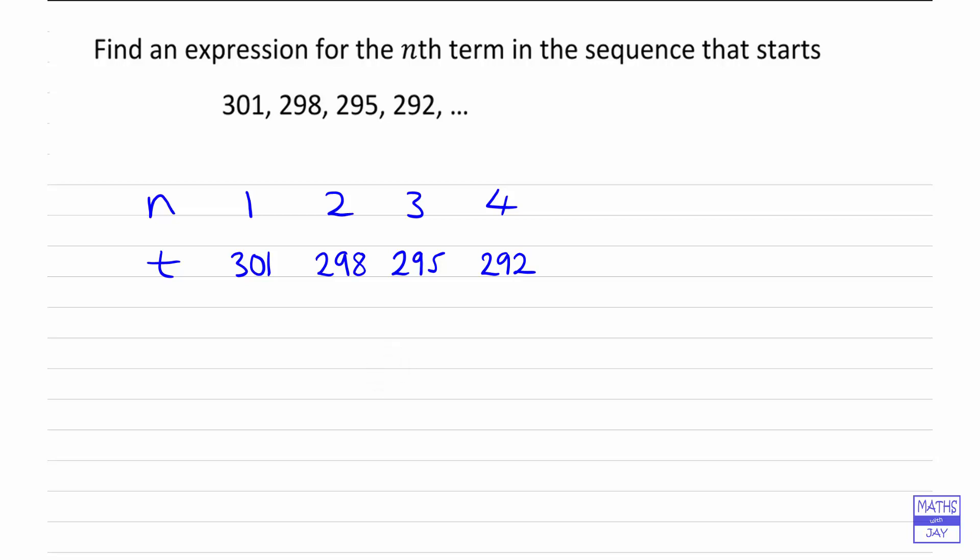Then we're going to look at the difference between the terms. We want to see what's going on, how we're getting from 301 to 298. We can see that we're subtracting 3, so it's important to put in the sign there. From one term to the other we're doing the same thing—we're subtracting 3 each time to get to the next term.